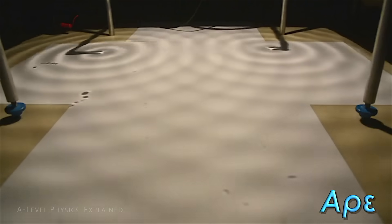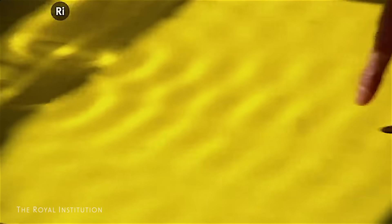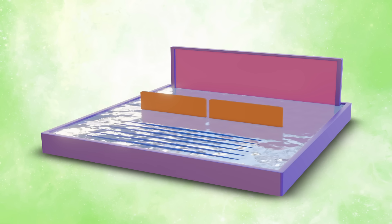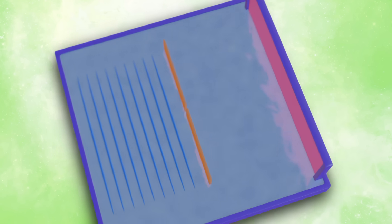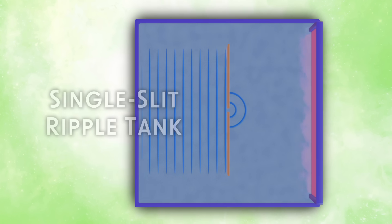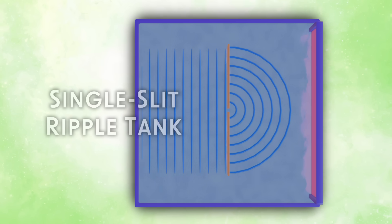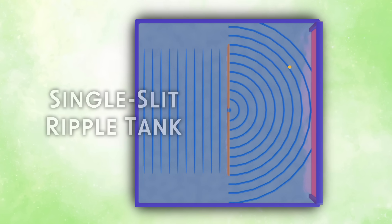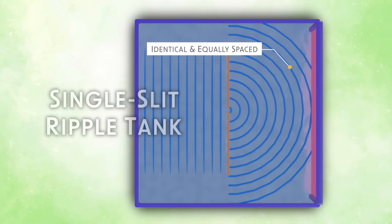Demonstrations of Young's experiment are often presented by using ripple tanks, but I like to use diagrams. To start, this virtual single slit ripple tank generates identical and equally spaced waves. They exit the slit as radiating equally spaced curves.